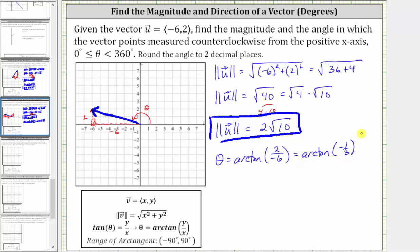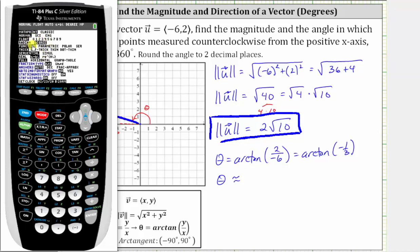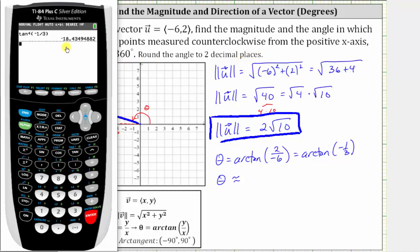And now we will go to the calculator and get an approximation for theta. We need to make sure the calculator is in degree mode by pressing the mode key, and notice how degree is highlighted. So we go back to the home screen, enter second tangent for inverse or arc tangent, and enter negative one divided by three, close parenthesis, and enter. Rounding to two decimal places, we have approximately negative 18.43 degrees.